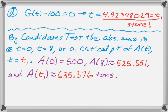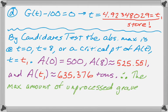And A of T1 is approximately 635.376 tons. So, all of them are in tons. Grammatically, I think it's okay to put tons at the end there. Okay, so those were the only candidates. So, the maximum amount of unprocessed gravel that we have at any time on the hours of operation is 635.376 tons.